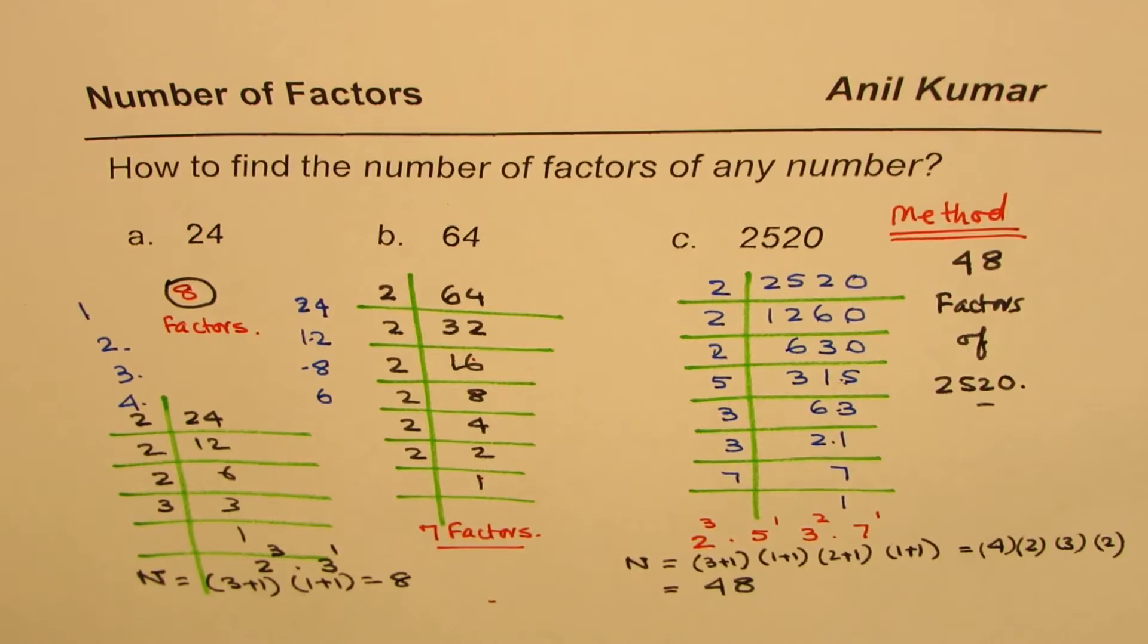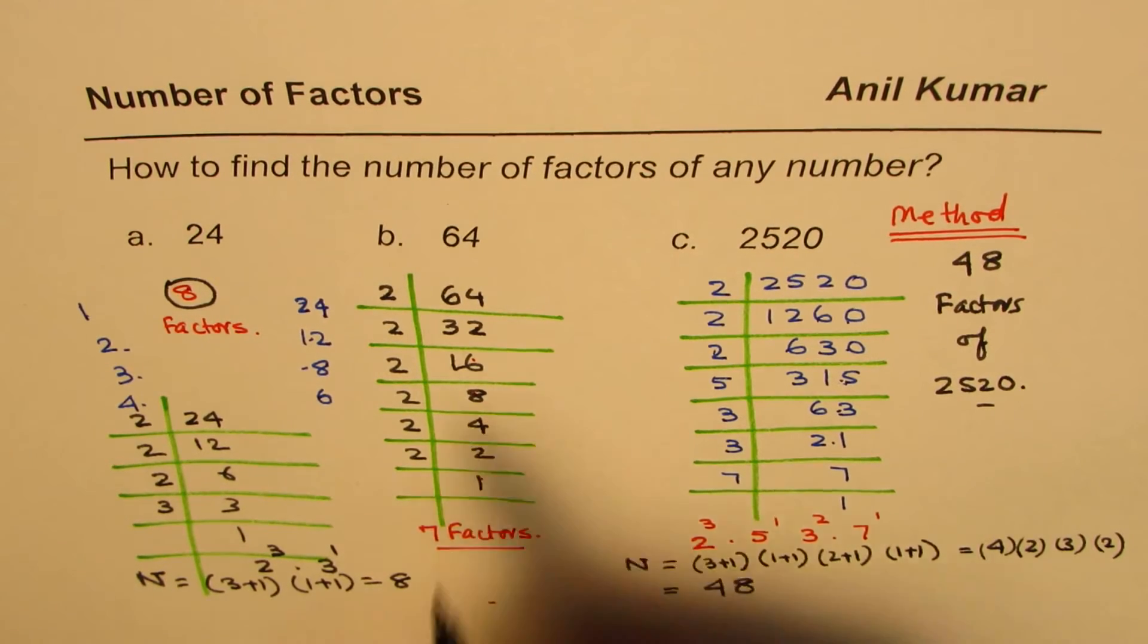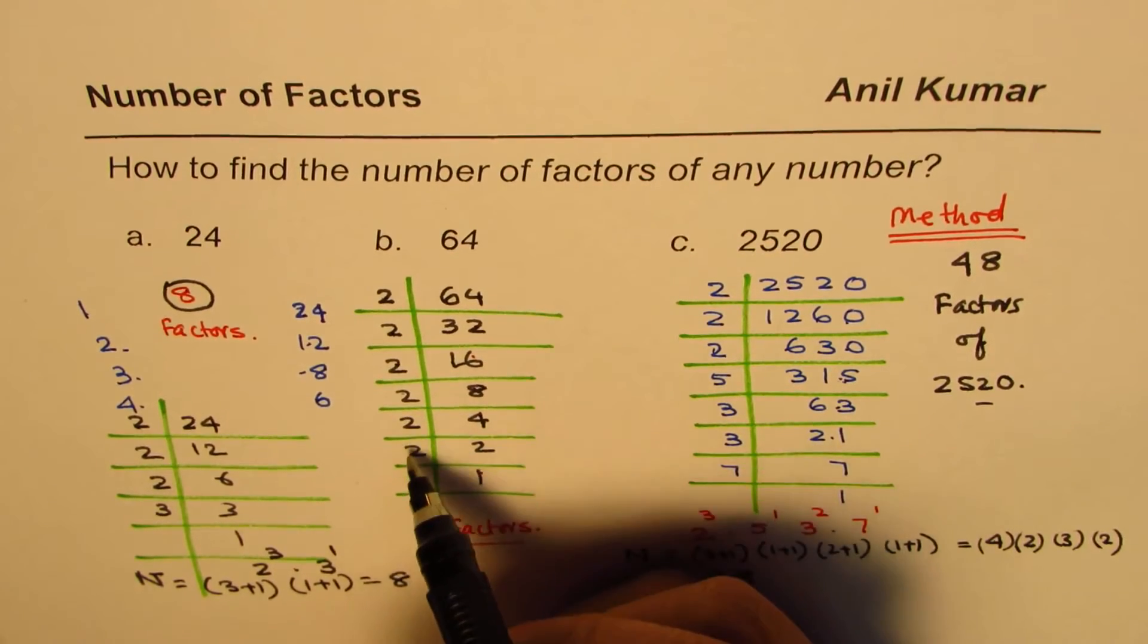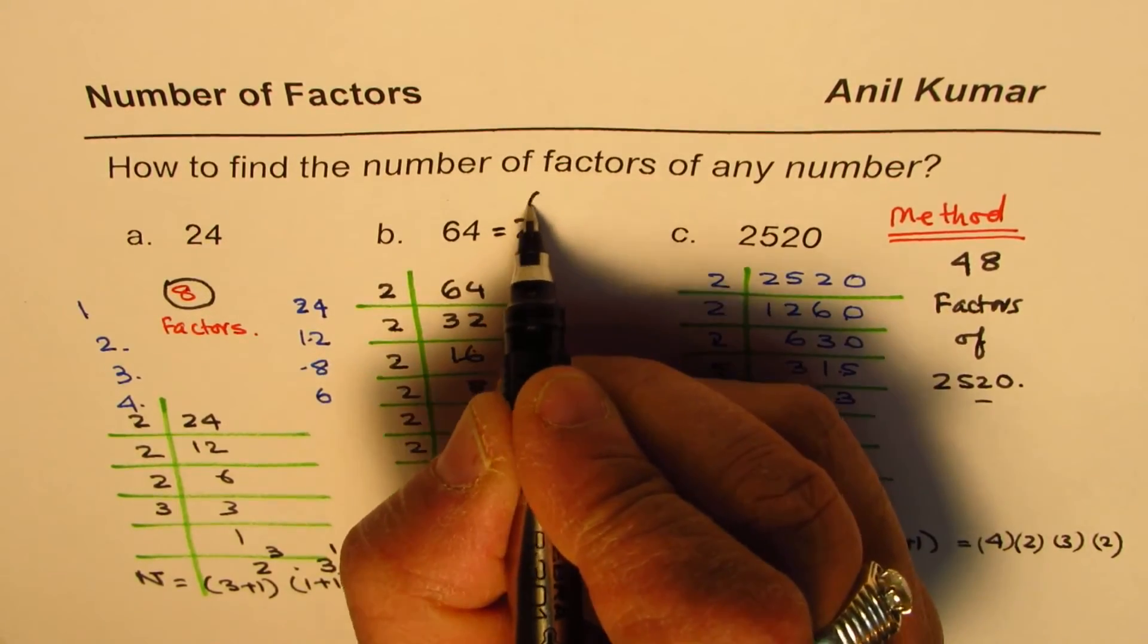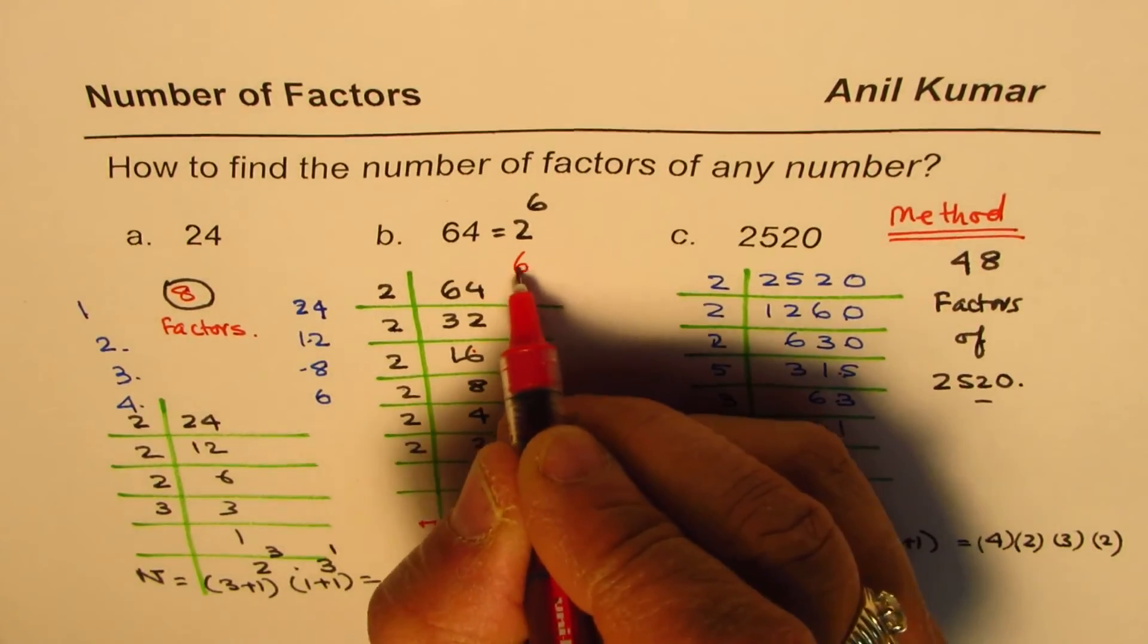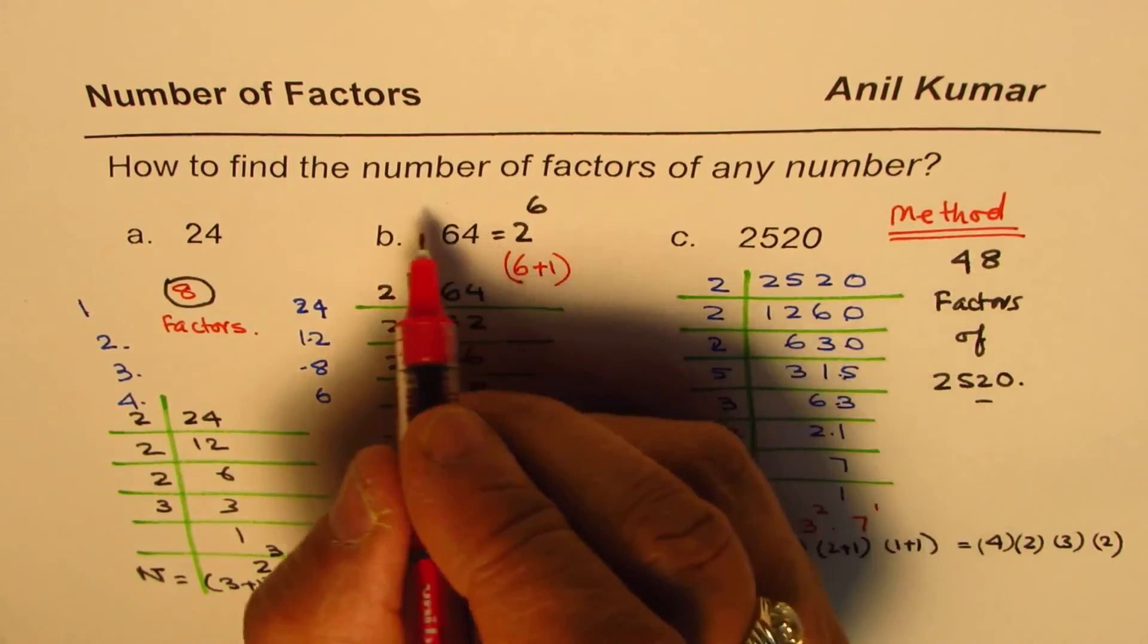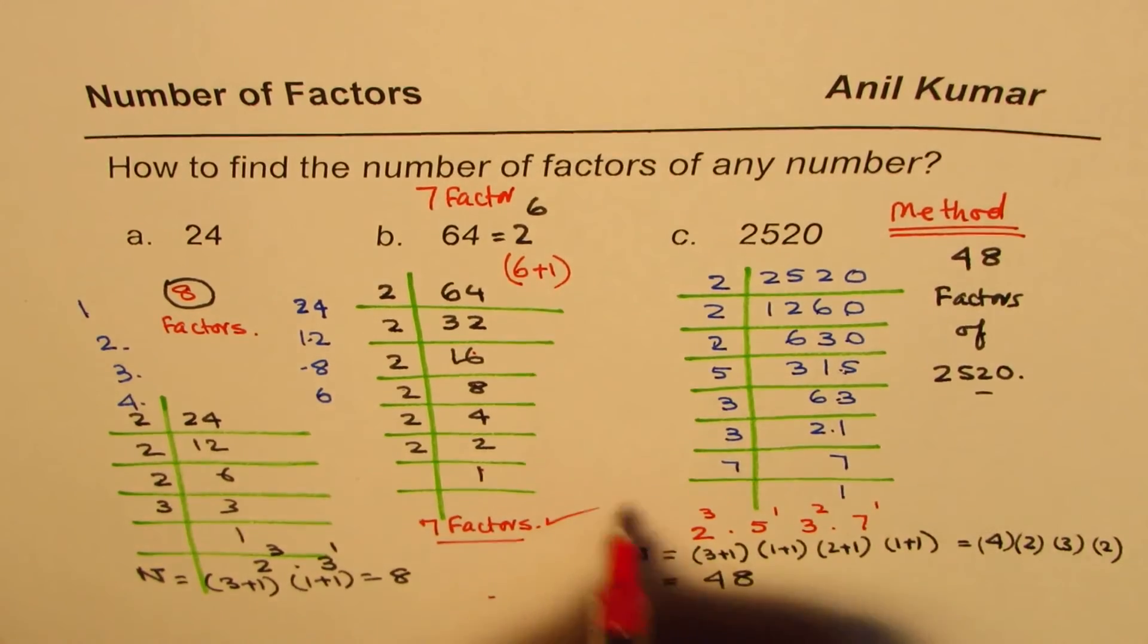So the trick works. It works. What happens in this case? Well, this is simple. How many 2s do we have? 1, 2, 3, 4, 5, 6. So we could write this as 2 to the power of 6 is 64. But the trick is you to add 1. So the answer here is 6 plus 1. Do you see that? And therefore, we have total of 7 factors. It works. Do you see that?